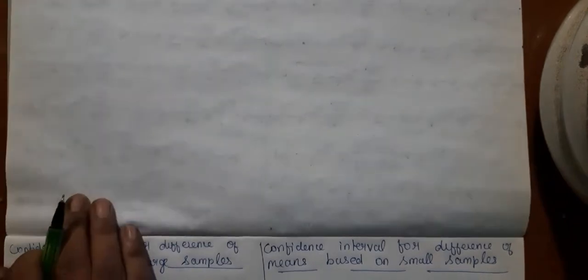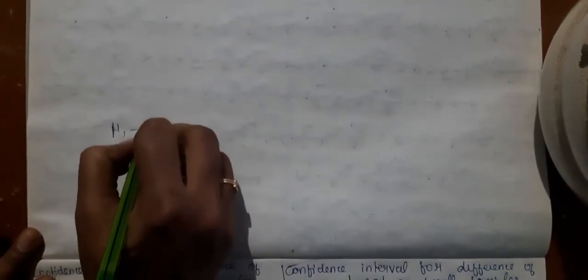In this video, we are going to construct the confidence interval for difference of means based on large samples and small samples. The problem is to find the confidence interval for mu1 minus mu2.